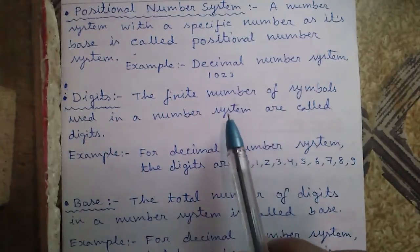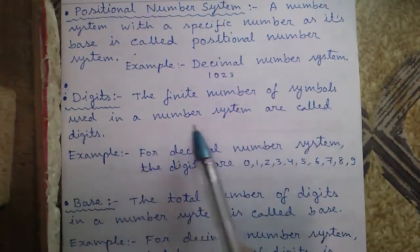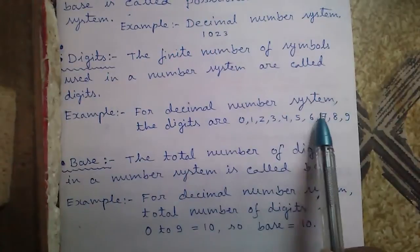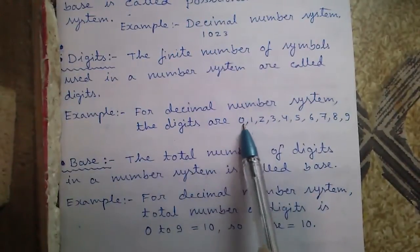Now digits. Digits are the finite number of symbols used in a number system. For example, for decimal number system, the digits are 0 to 9.